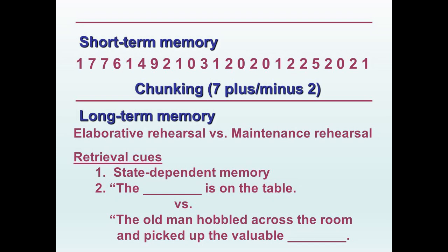Seven plus or minus two gives us a capacity of five to nine chunks. Looking at a long series of numbers beginning with 1-7, that number is obviously beyond the capacity of short-term memory. However, you could engage in a psychological process called chunking, which means reorganizing information into a smaller number of meaningful units that would fall within the capacity of short-term memory.